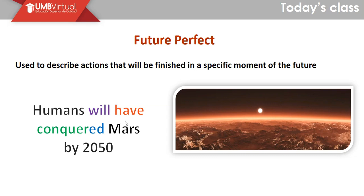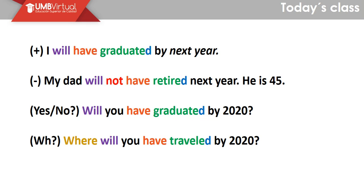We use will plus have, because in the future perfect we use will plus have every single time, followed by the past participle of the verb — if it's a regular verb, it ends in -ED; if irregular, it uses a different form. Examples: 'I will have graduated by next year.' 'My dad will not have retired next year — he's 45.' 'Will you have graduated by 2020?' 'Where will you have traveled by 2020?' All of those verbs are regular, that's why we use -ED. But it's kind of different if we use an irregular verb because the conjugation works differently.